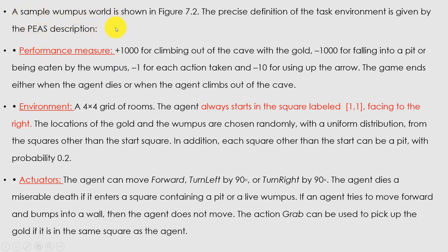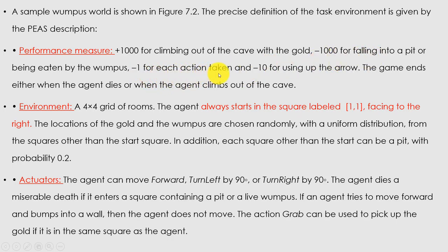A sample of the Wumpus world is given in the figure. The precise definition of the task environment is given by PEAS. The performance measure is: plus 1000 for climbing out of the cave with gold, minus 1000 for falling into a pit or being eaten by the Wumpus, minus 1 for each action taken, and minus 10 for using up the arrow. The game ends either when the agent dies or when the agent climbs out of the cave.